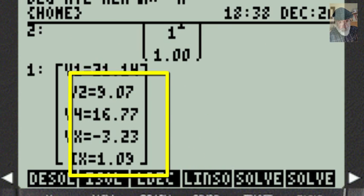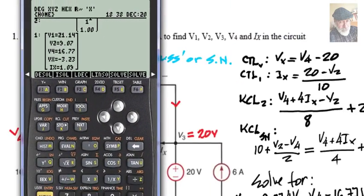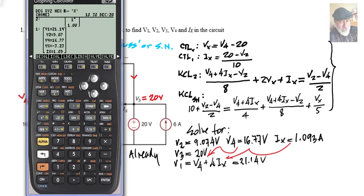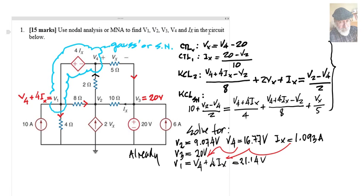And those are the values: V1 21.14 volts, V2 9.07 volts, V4 16.77 and V3 is already given is 20 volts. The value of the current IX is 1.09 amps and that is all that was that question. Thank you, thank you very much and I hope to see you in the video with a solution to the second of the six questions in the exam.